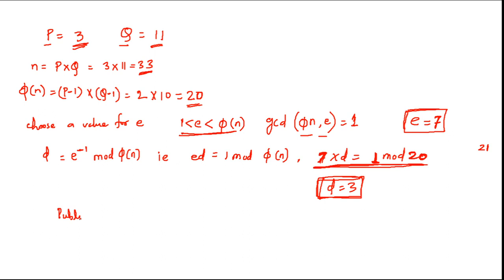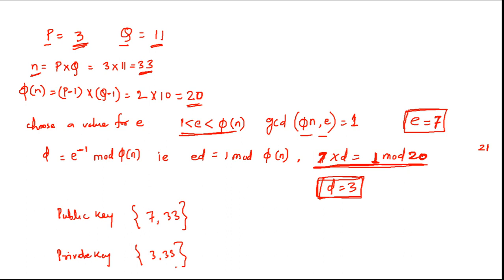Now for the public and private keys: the public key is (E, N) = (7, 33), and the private key is (D, N) = (3, 33). I chose two prime numbers P = 3 and Q = 11, giving public key (7, 33) and private key (3, 33). This public key will be shared with everybody in your network, and the private key will be kept secretly on your machine only.